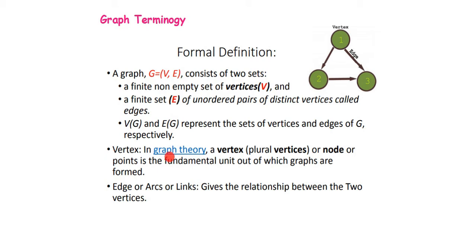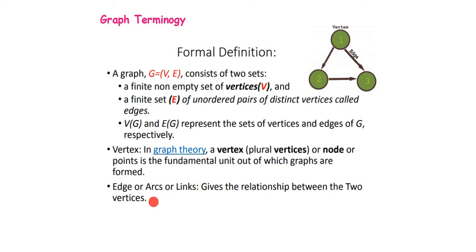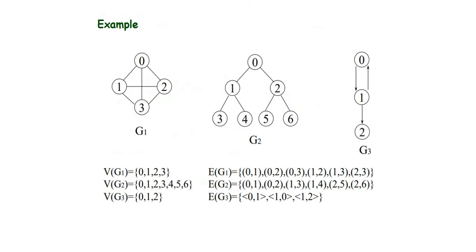The definition of a vertex: in graph theory, a vertex — plural vertices — can be one or infinitely many. A vertex is also called a node or a point, but in graph theory we usually call it a vertex. It is the fundamental unit out of which graphs are formed. Edges are also called arcs, links, or lines — they connect two vertices and give a relationship between them.